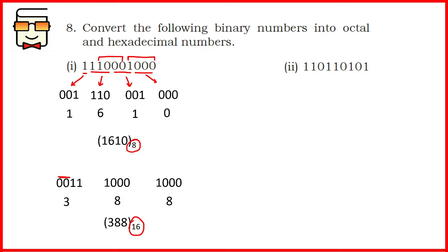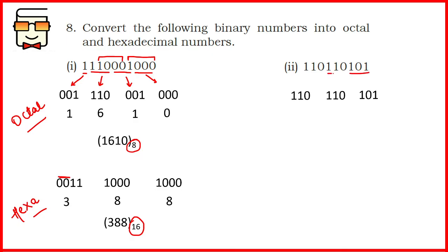Coming to the second part, we first do the octal conversion. Grouping in groups of 3, we get 3 groups: 101, 110, and 110. No extra addition of zeros is required here. Writing the corresponding octal digits gives the final answer as 665.